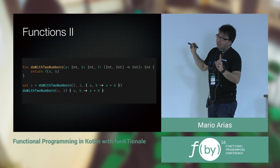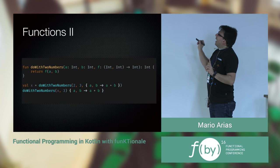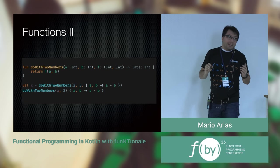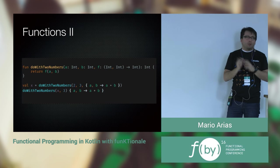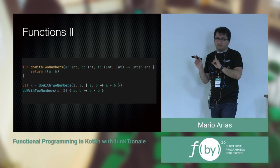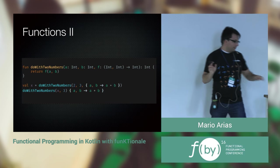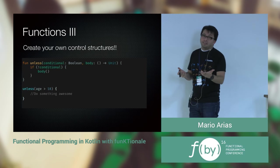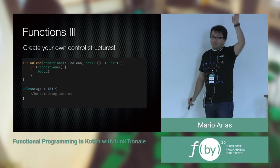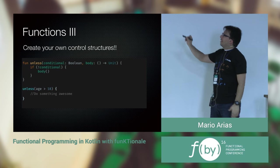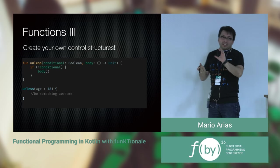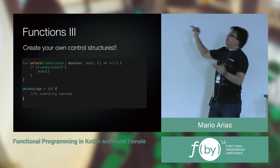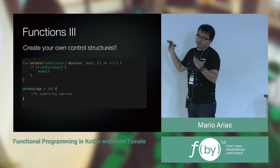If the last parameter is a function, you can pass that parameter outside the parentheses — like Groovy, or Ruby, which I think does that too. That means you can actually create your own control structures. Does anyone know Ruby? Ruby has an `unless` control structure that is like a negative if — execute this if the condition is false. You could create an `unless` in Kotlin if you want.